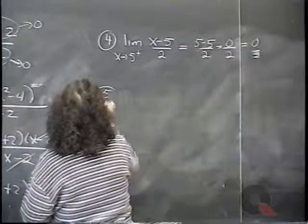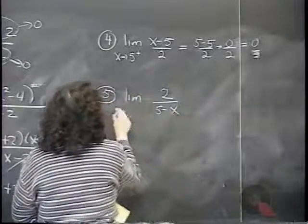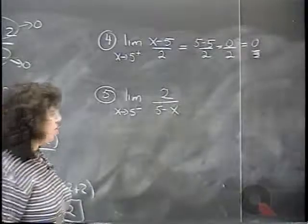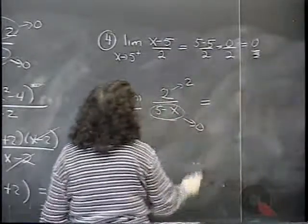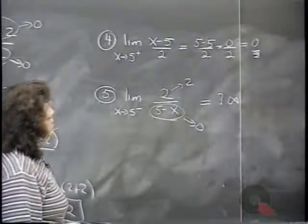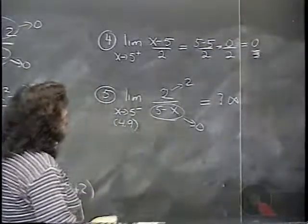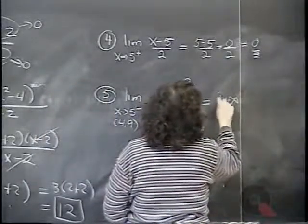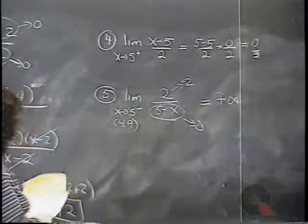Example 5: the limit of 2/(5−x) as x approaches 5 from the left. As x approaches 5 the bottom goes to zero and the top stays 2, so the limit is infinite. For the sign, we use testing value 4.9 (close to 5 but less than 5). Substituting: 2 over (5 − 4.9) = positive over positive, giving plus infinity. Note 5 − 4.9 approaches zero but stays positive, and 2 is positive.